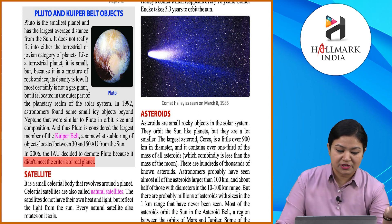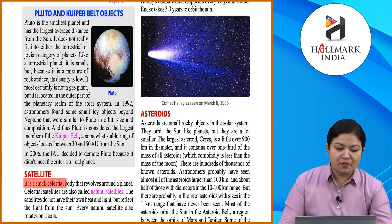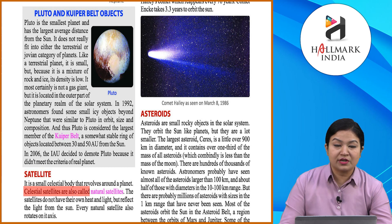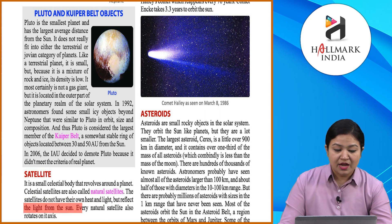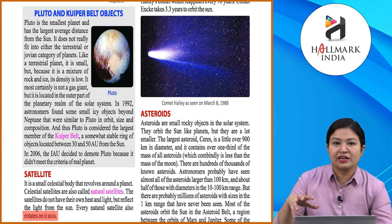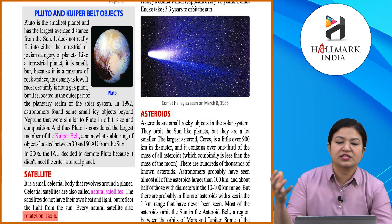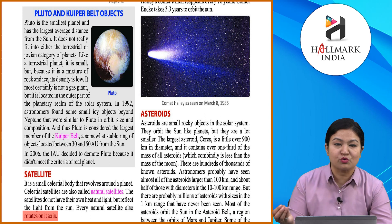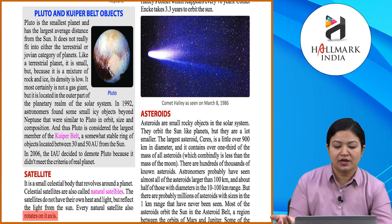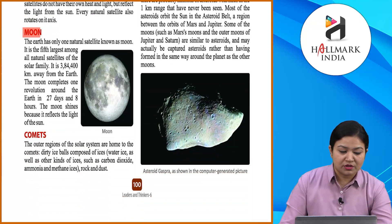A satellite is a small celestial body that revolves around a planet. Celestial satellites are also called natural satellites. Satellites do not have their own heat and light but reflect the light from the Sun. Every natural satellite also rotates on its axis. The Moon is Earth's natural satellite and does not have its own light or heat — it reflects light from the Sun.